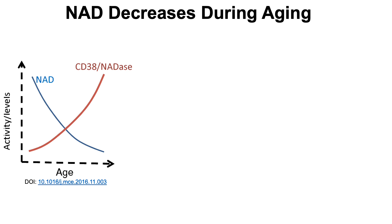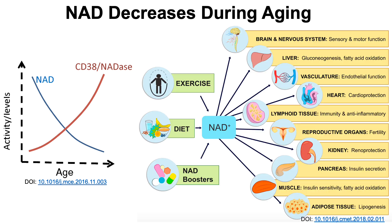NAD decreases during aging. Looking at the simplified graph here on the left, we can see activity or levels on the y-axis plotted versus age. NAD, the blue line, shows decreasing activity during aging. So why is that important?